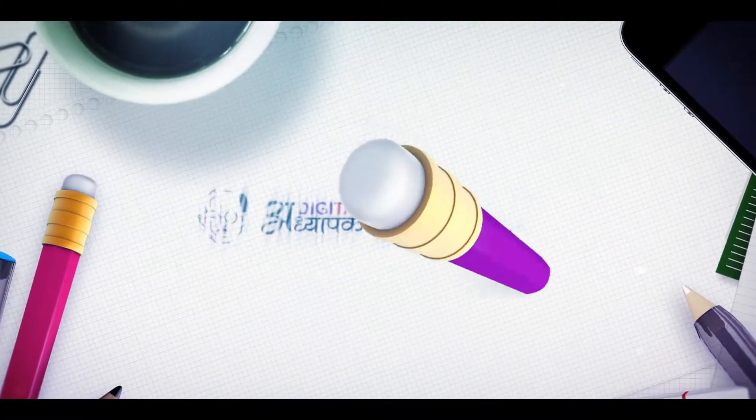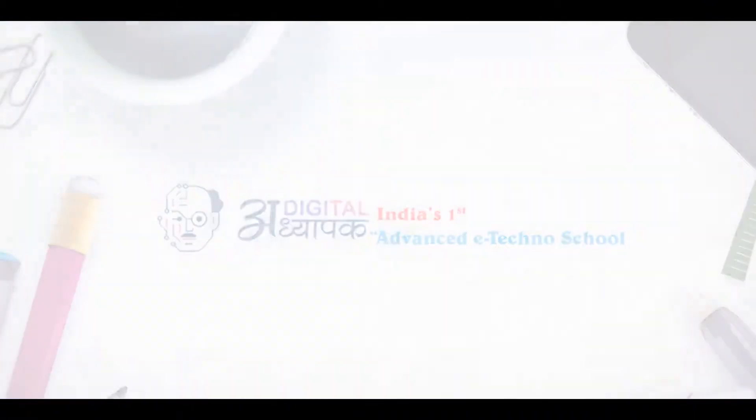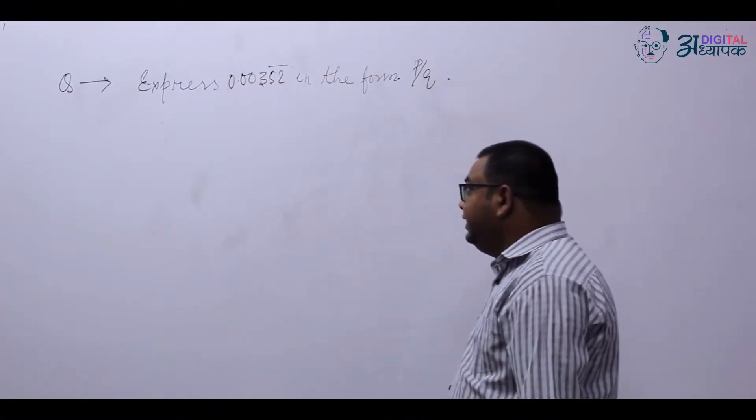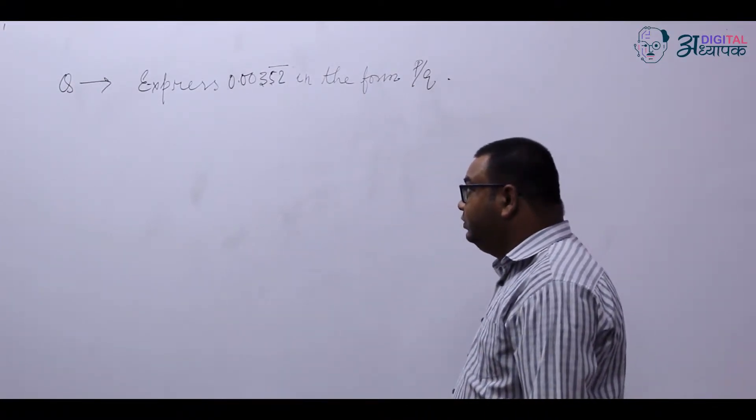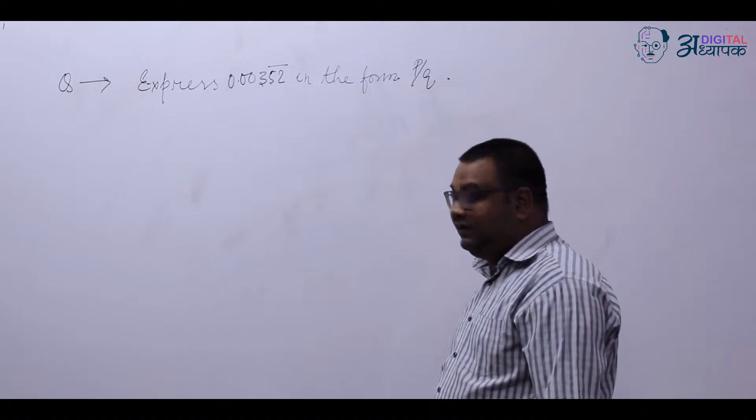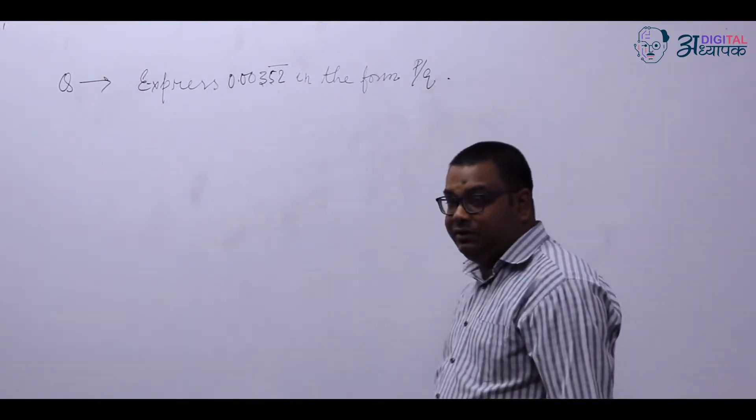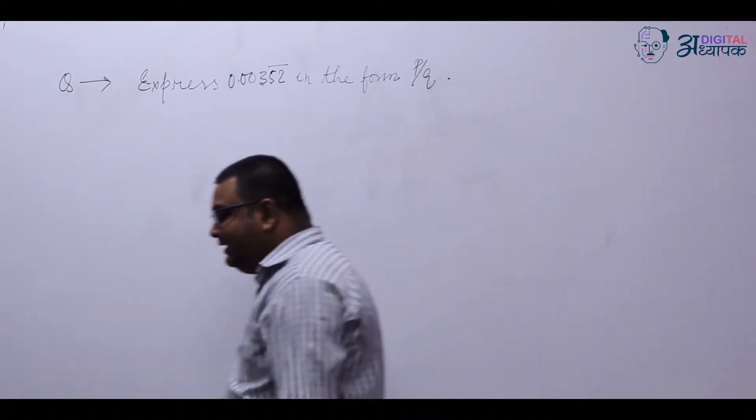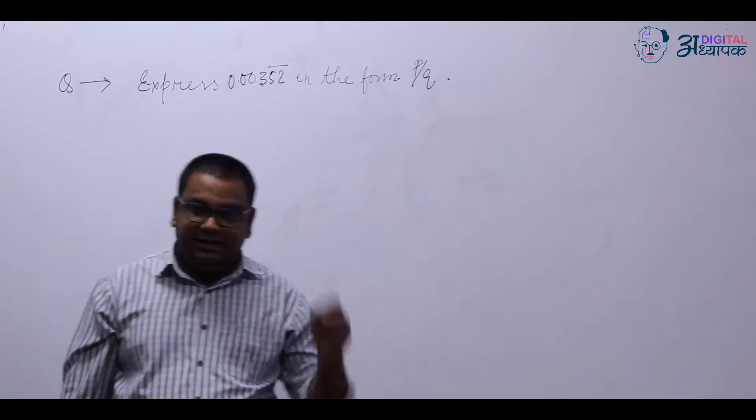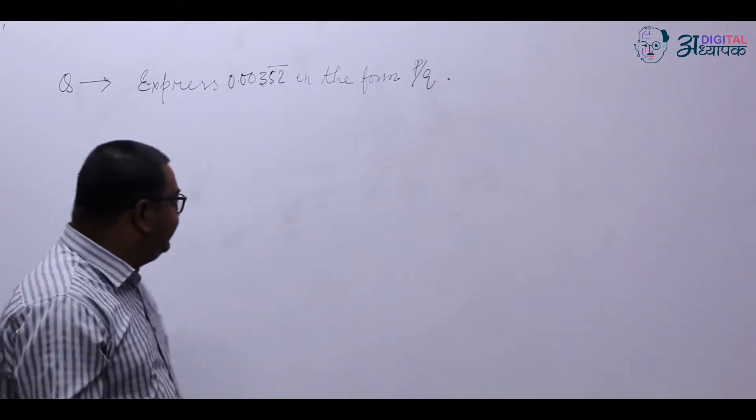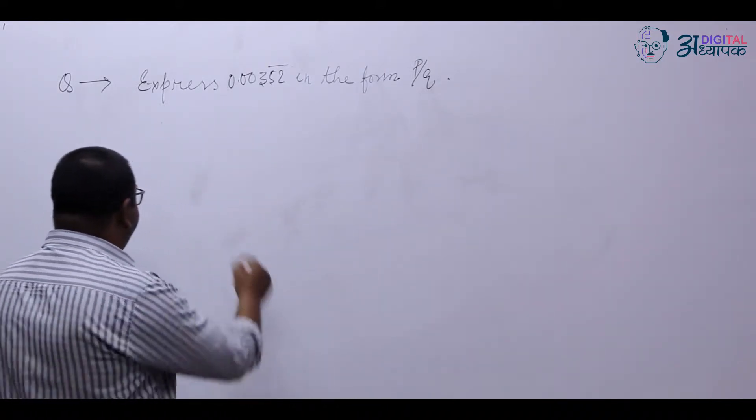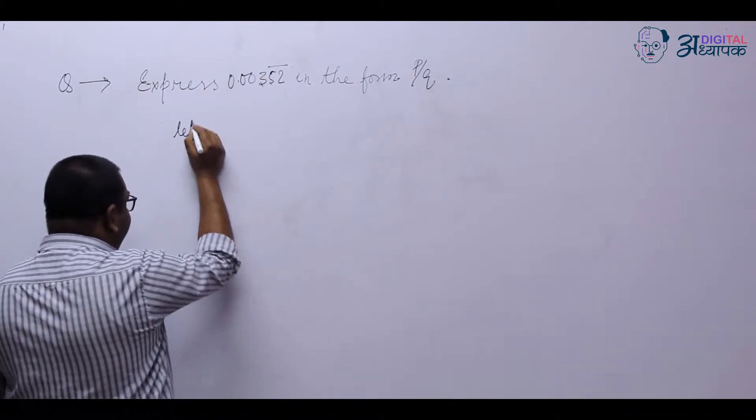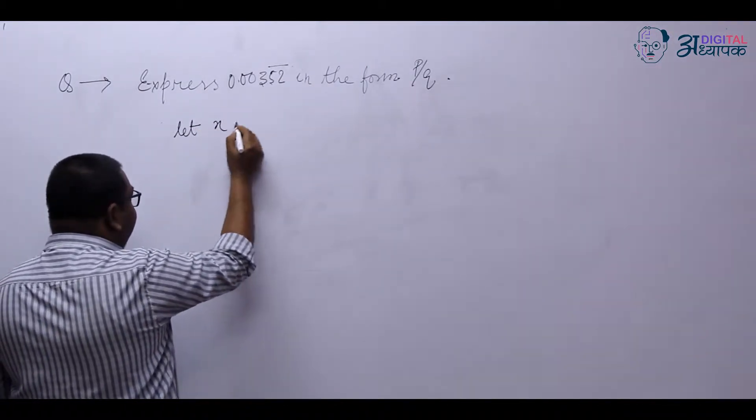Welcome to digital adhyapak. The problem is to express 0.00352 bar on 52 in the form p upon q. From the number it is clear that it's a non-terminating recurring decimal. First of all, we will let this number as x.